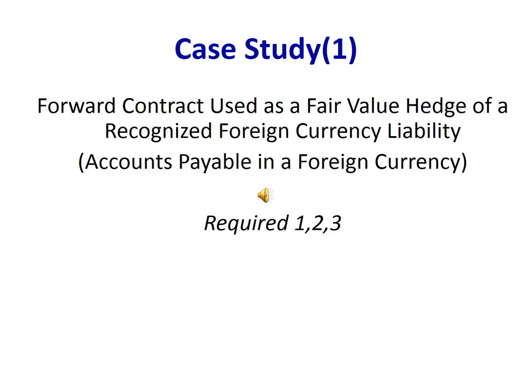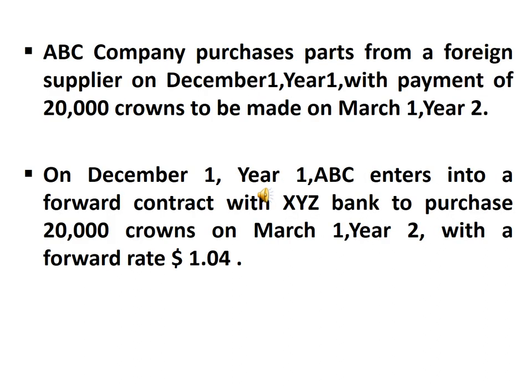The first case study is about forward contracts used as a fair value hedge of a recognized foreign currency liability, which is accounts payable in a foreign currency, with requirements number 1, 2, and 3. APC company purchases parts from a foreign supplier on December 1st, Year 1, with payment of 20,000 crowns to be made on March 1st, Year 2. The company needs to manage its exposure to the risk of fluctuation in foreign currency.